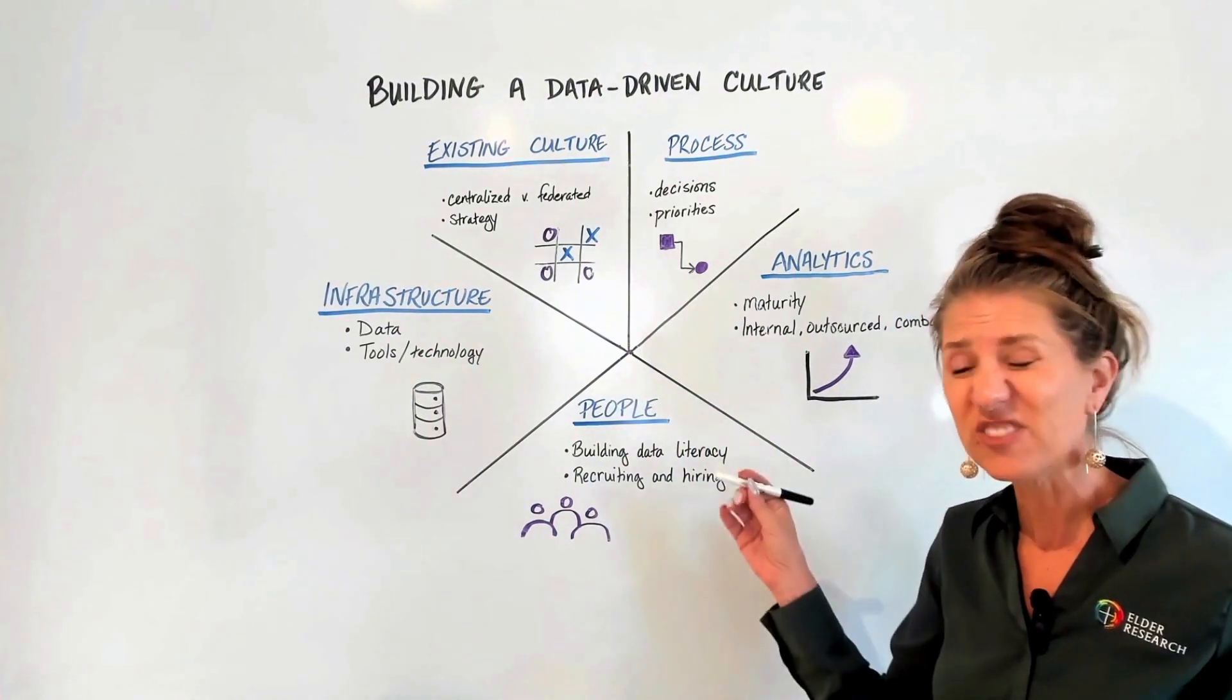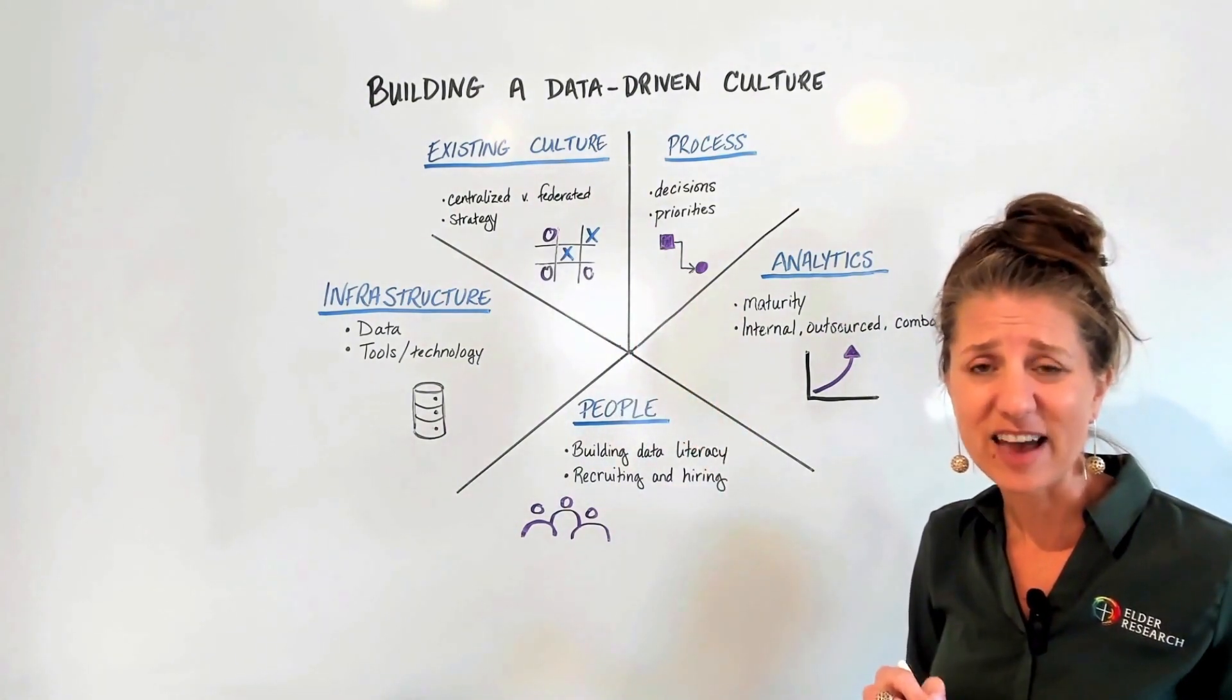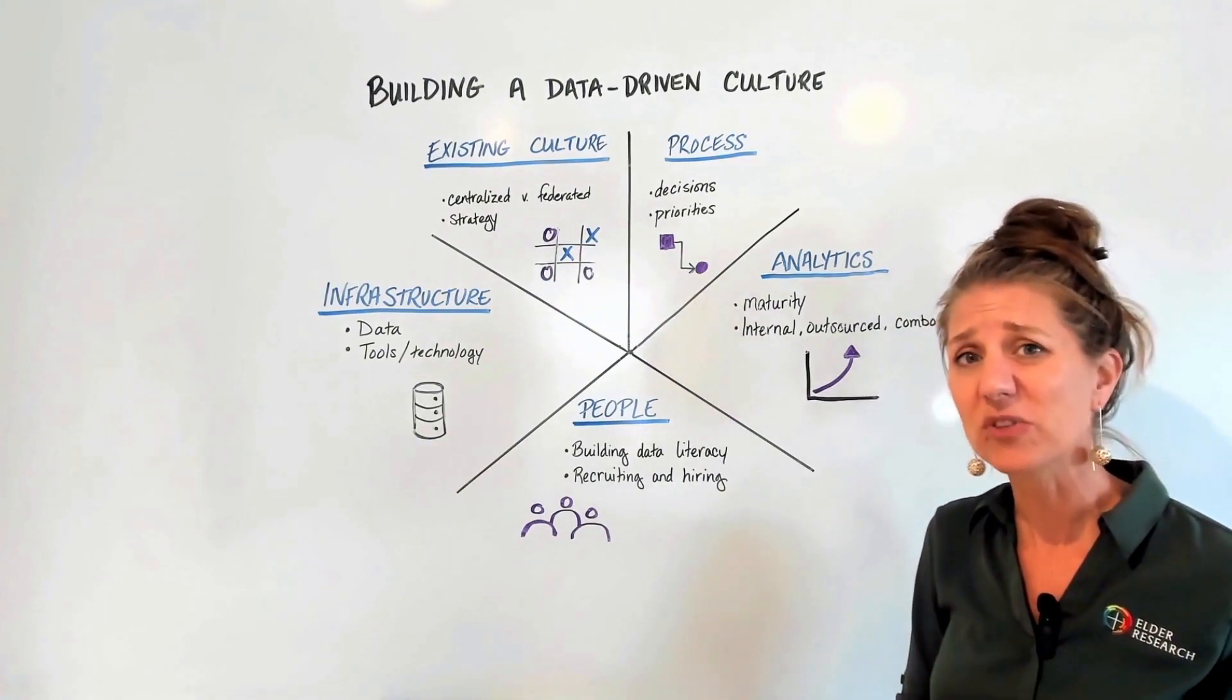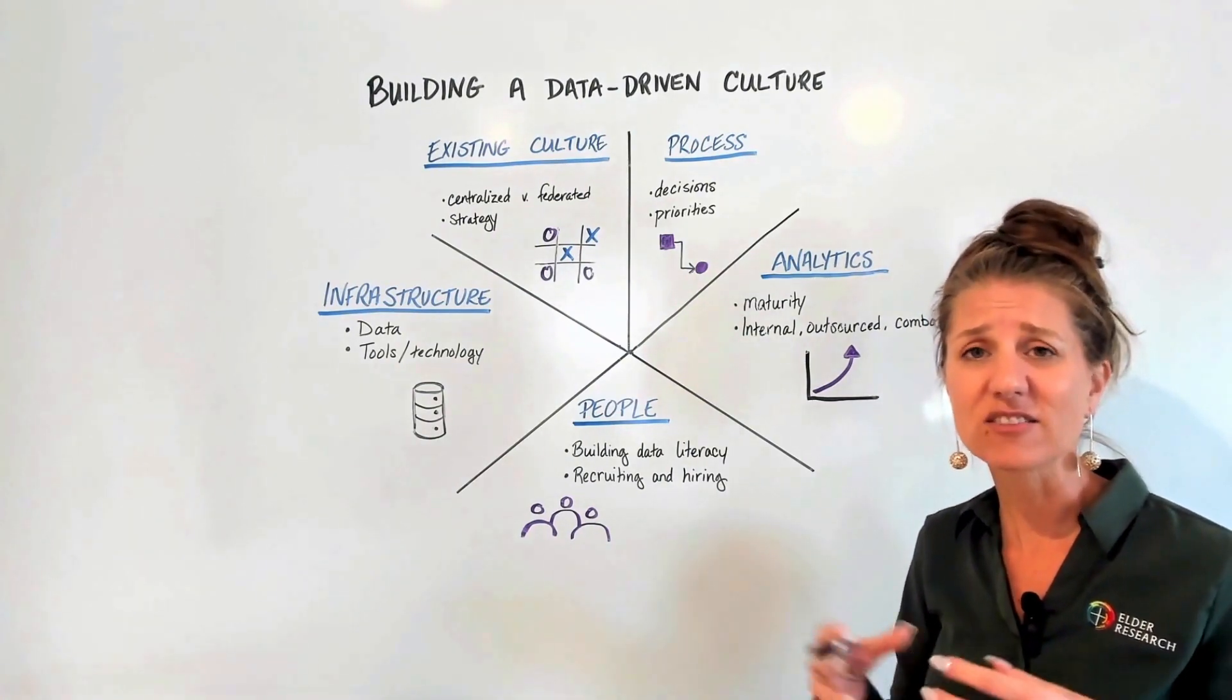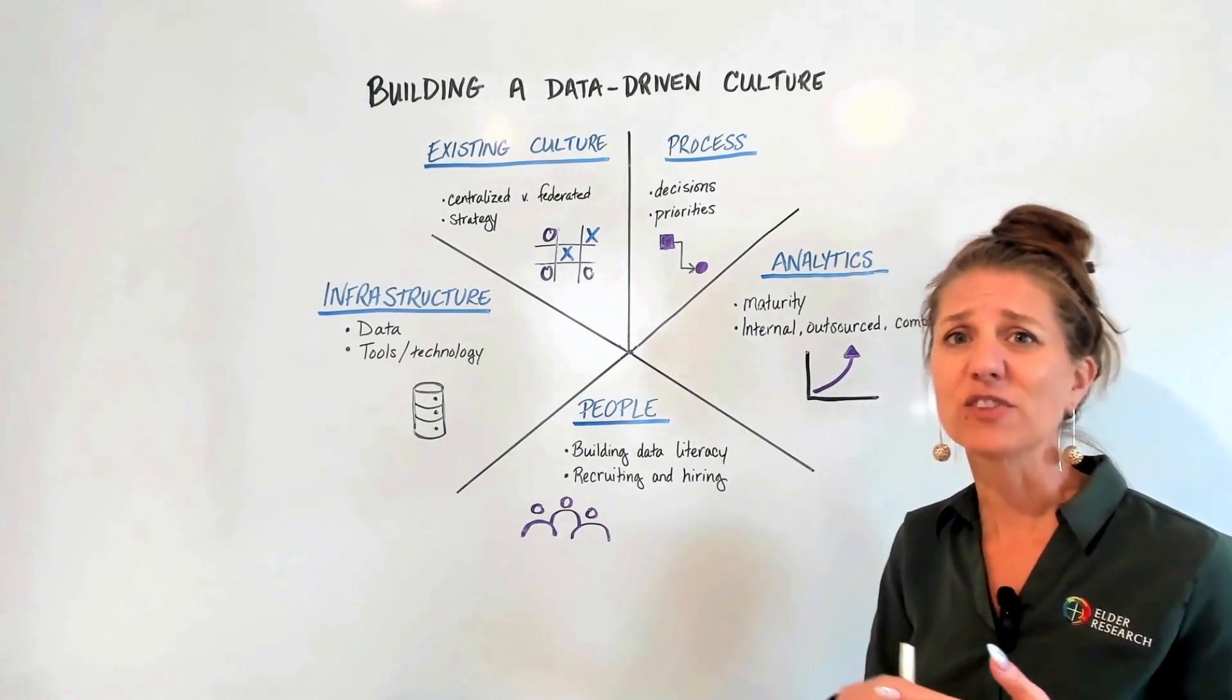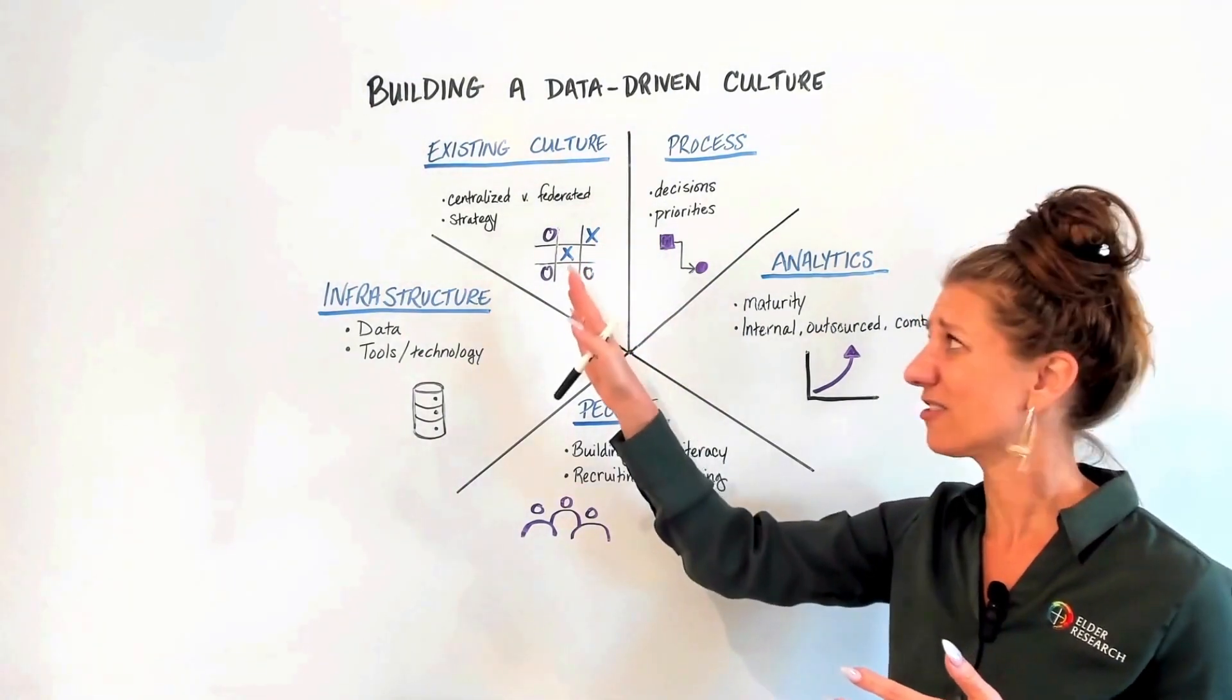The first is understanding where you're starting from. There's going to be a lot of communication that needs to happen. You're going to need to do some change management, and in order to help those things be successful, it's good to understand if your company is centralized or federated. That is, where does the information flow through? How are decisions made? Where does the money come from? That's a great place to start.